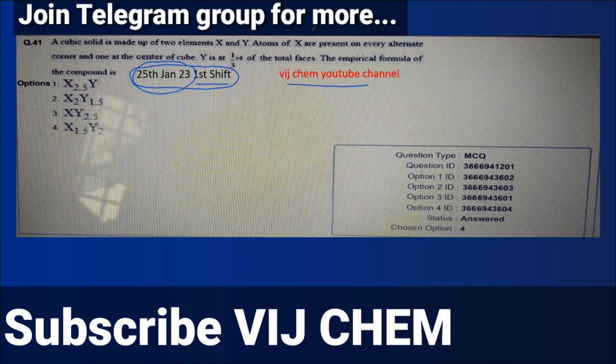So let's see the question. You can also join my telegram group. A cubic solid is made up of element X and Y. Atoms X are present on every alternate corner. So here if I take the alternate corner, what does it mean?